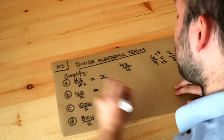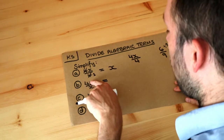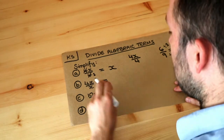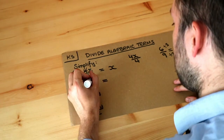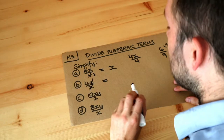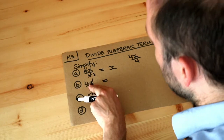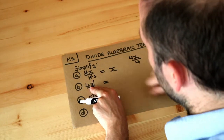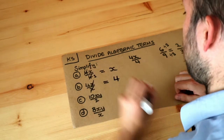What about the next one? Can you see there's something common to top and bottom? There's an x at the top and the bottom, so I can just cross those out. And if you're left with nothing at the bottom, you just get what's left at the top. So the answer would be four.